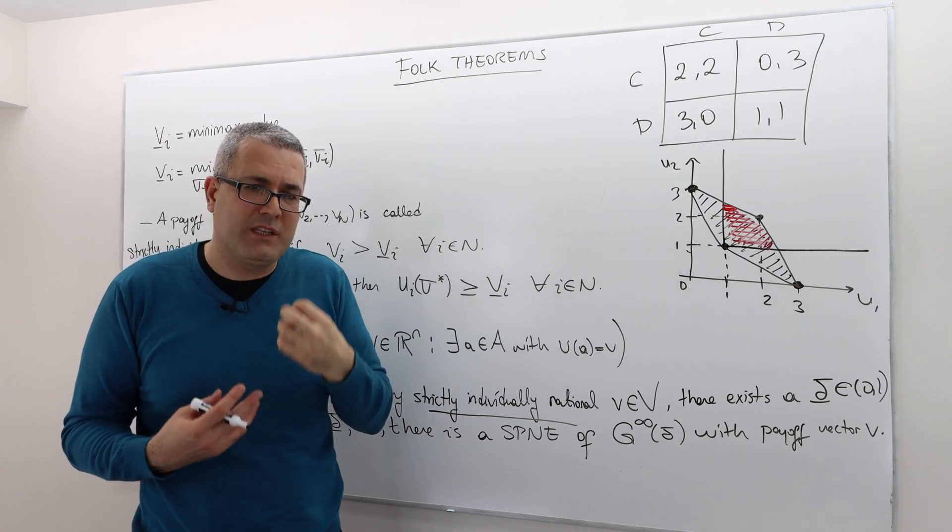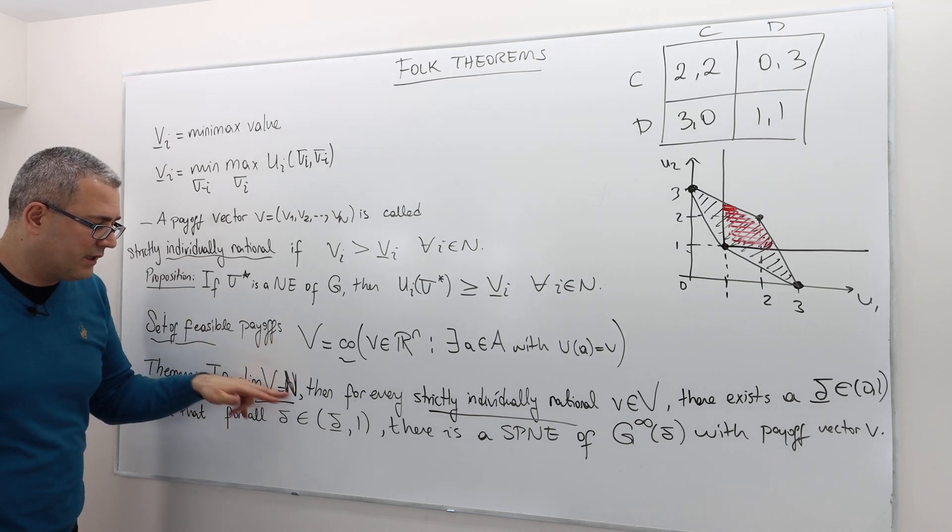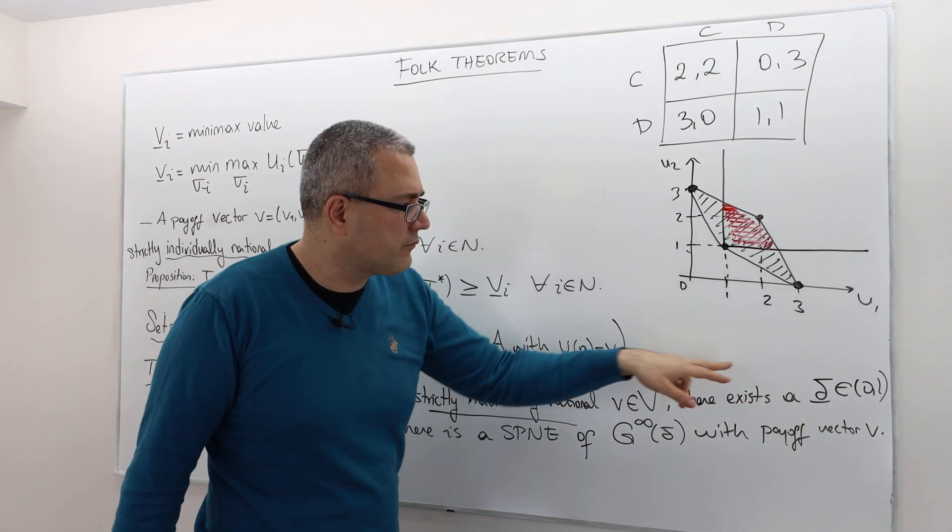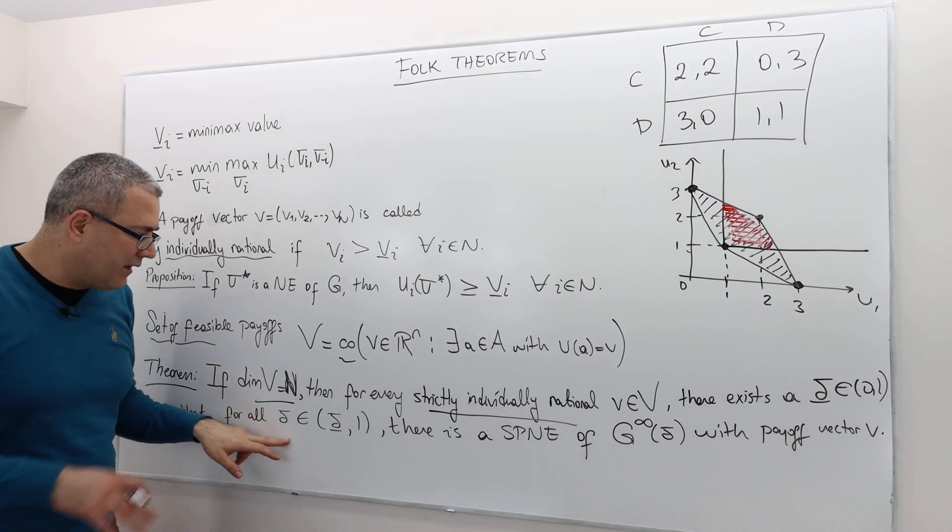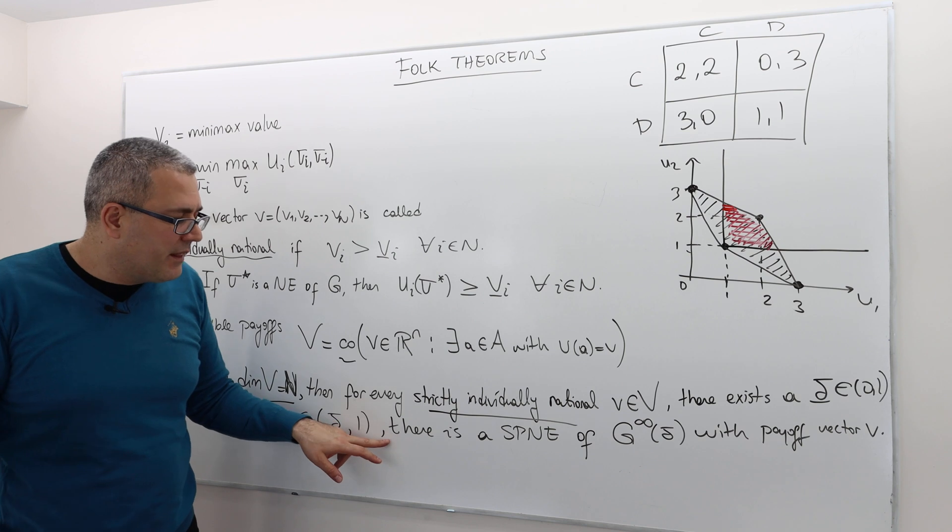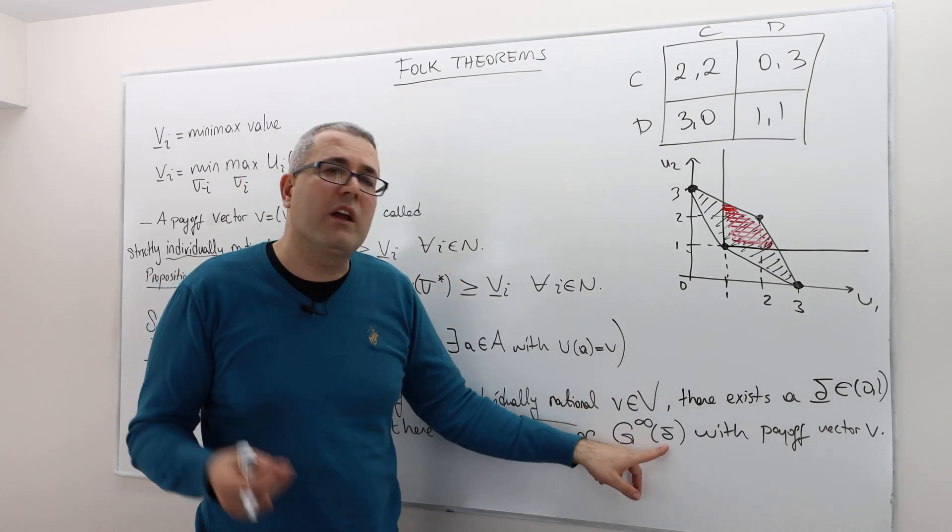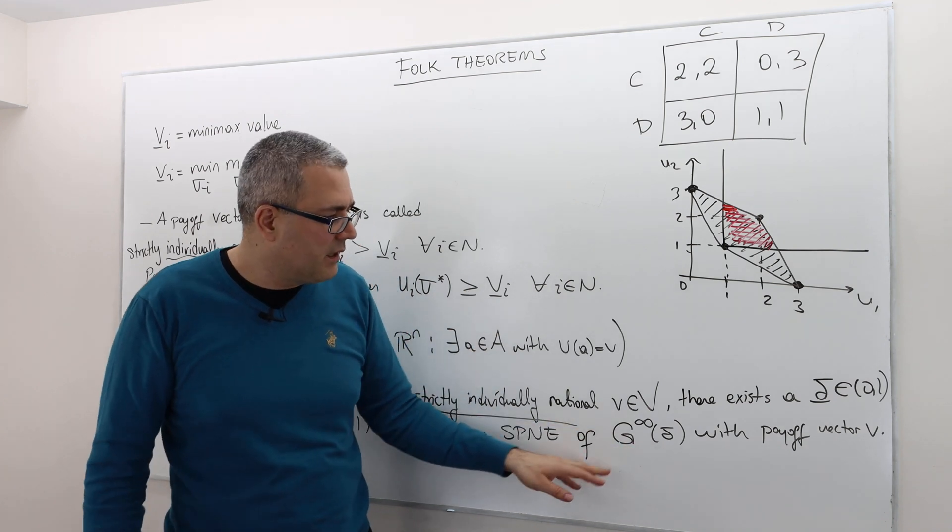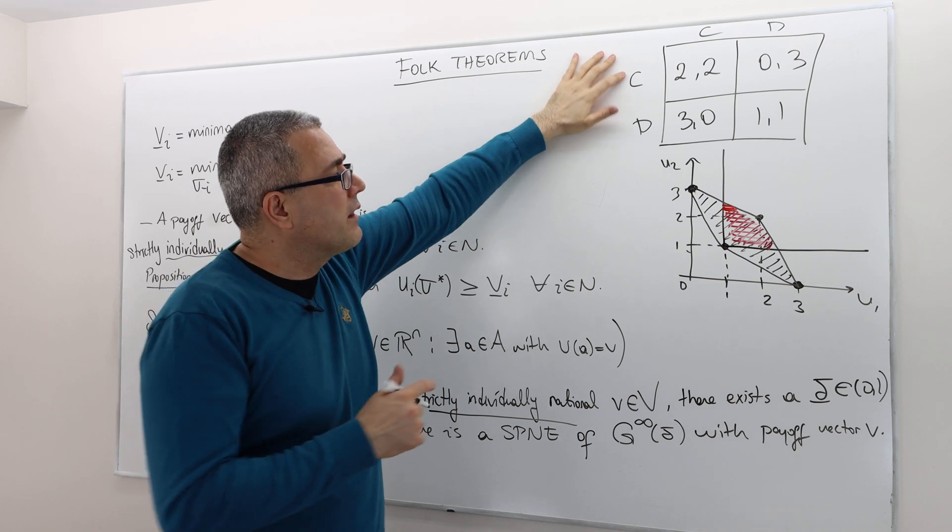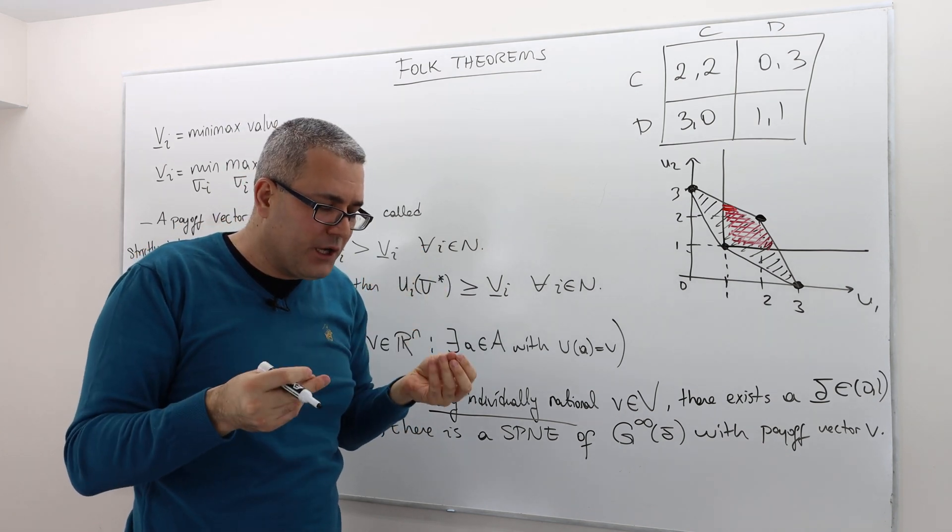So every payoff vector here can be supported as a subgame perfect Nash equilibrium of a repeated game. If players are patient enough, this is what we want to say. So let me start reading again. If the dimension of the game is equal to the payoff, I'm sorry, the number of the players, then for every strictly individually rational payoff vector v, there exists some threshold delta, which is in the 0, 1 interval, such that for every delta greater than this threshold delta bar, meaning as long as the players are more patient than this threshold delta level, then there exists a subgame perfect Nash equilibrium strategy of the infinite horizon repeated game of this stage game G, where all the players have the same discount factor, this is for simplicity, with payoff vector v.